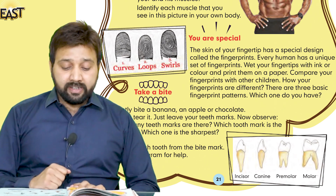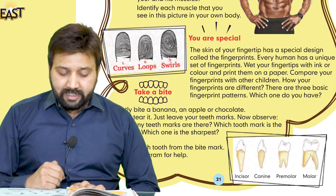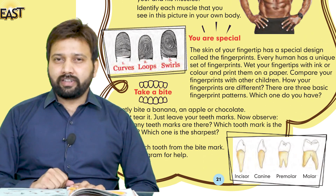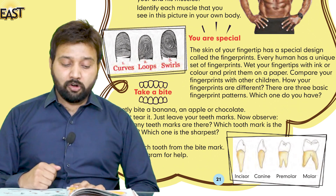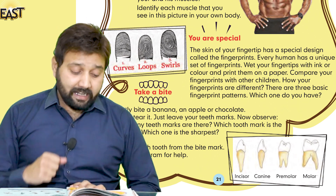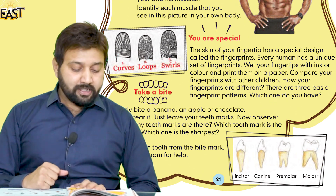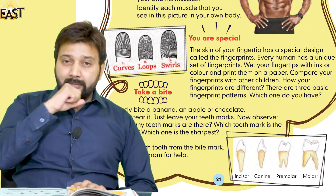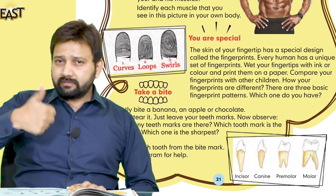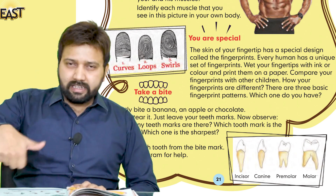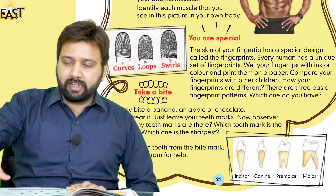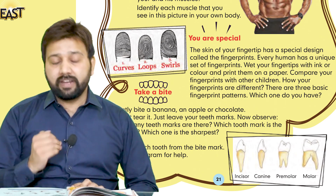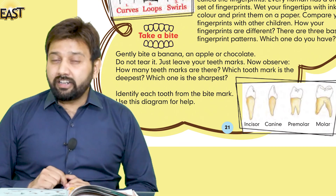Compare your fingerprints with other family members, friends, or children — how are your fingerprints different? There are three basic fingerprint patterns — which one do you have? اللہ تعالی نے ہمیں تین قسم کے fingerprint patterns دیے ہیں: پہلا curves، دوسرا loops، اور تیسرا swirls. آپ کے سامنے تینوں کی pictures موجود ہیں. اب آپ نے اپنے finger tip کو ink یا color میں لگا کر paper کے اوپر fingerprint لینے ہیں، پھر compare کر کے judge کرنا ہے کہ آپ کا fingerprint pattern کون سا ہے۔